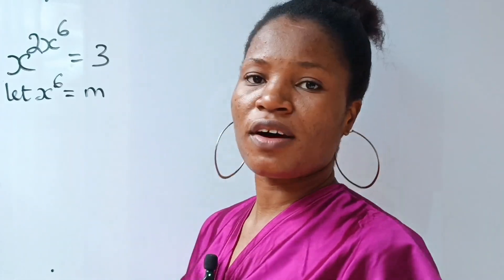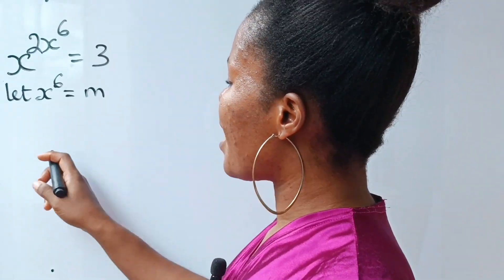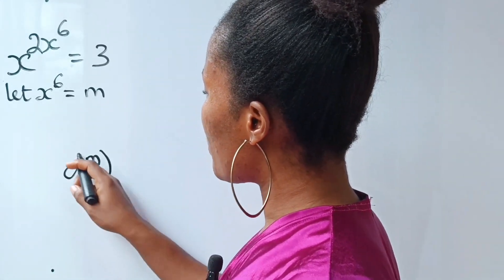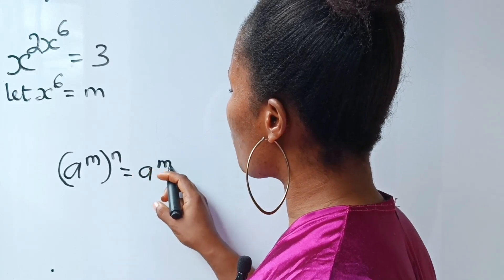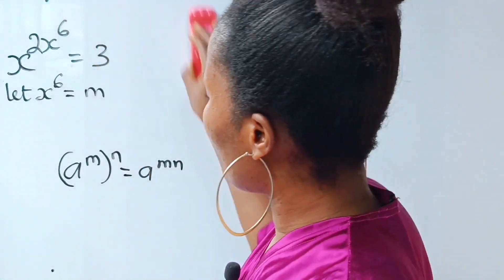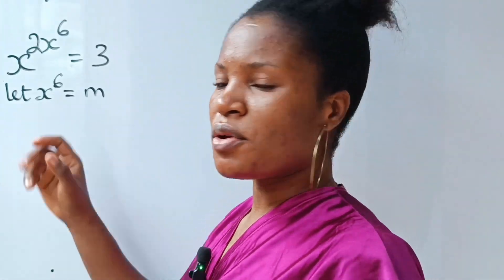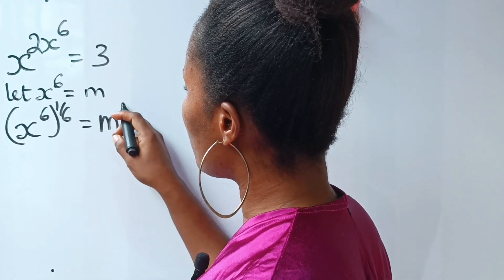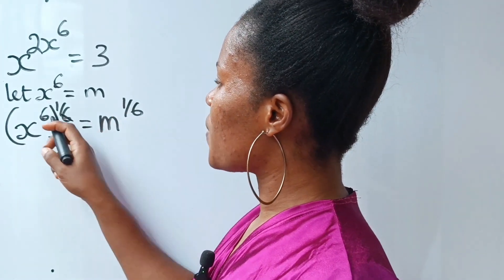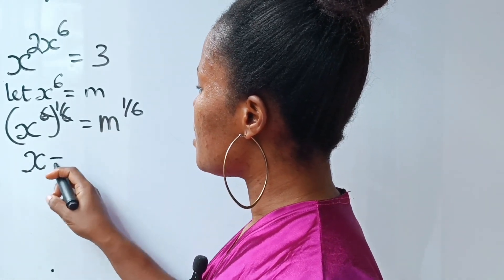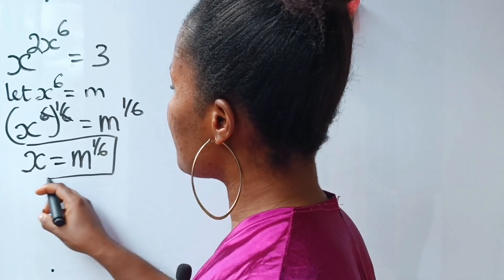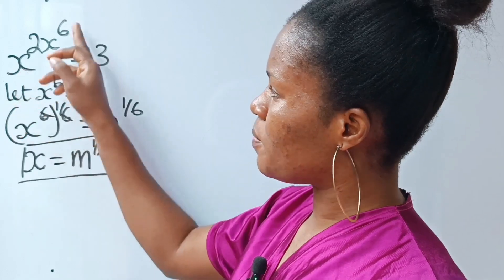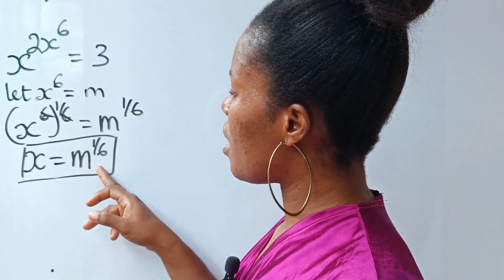Now, anywhere we see x we are going to replace it. But recall that according to the law of indices or exponents, a to the power of m raised to the power of n is equal to a to the power of mn. That means to get the value of x, we are going to raise each side of this equation to the power of one over six. So x is equal to m to the power of one over six. This is a very important equation.